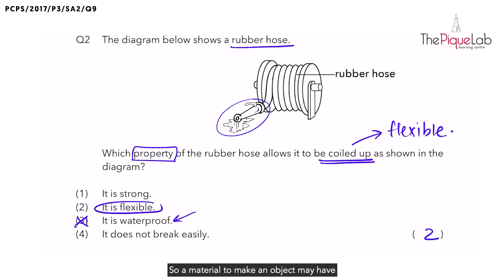So a material to make an object may have many necessary properties. However, it is important for students to take note of the property that is most relevant to what the question is asking you about.